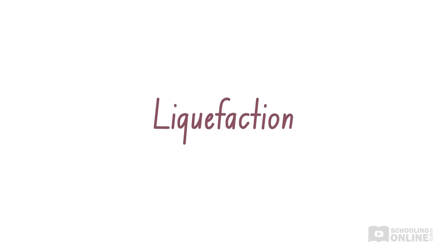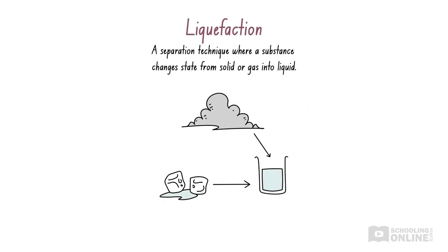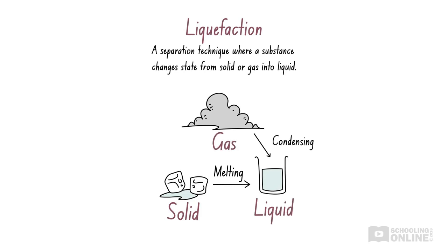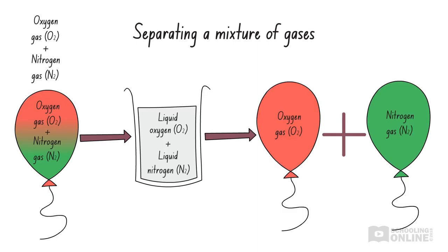Now, let's look at the process of liquefaction. Liquefaction is where a substance changes state from solid or gas into liquid — in other words, when a solid melts into a liquid or when a gas condenses into a liquid. Liquefaction can be used to separate mixtures if their components have different melting or boiling points. However, its most common application in chemistry is separating a mixture of gases, such as nitrogen and oxygen, which have similar boiling points. Firstly, the entire mixture is cooled into a liquid, then fractional distillation is used to separate the components of this mixture.